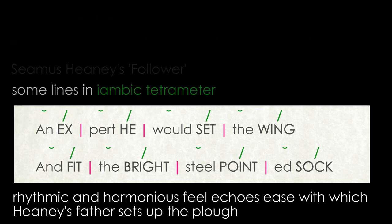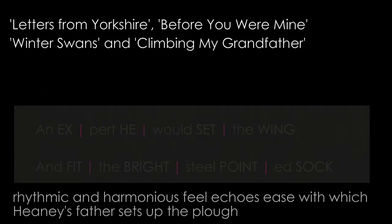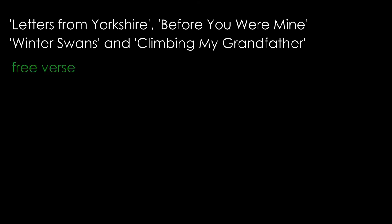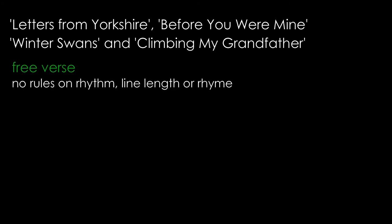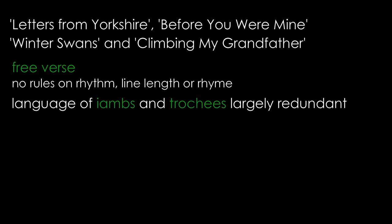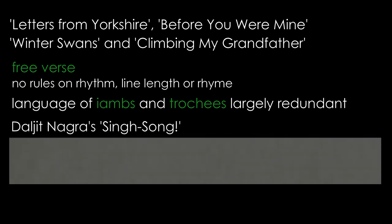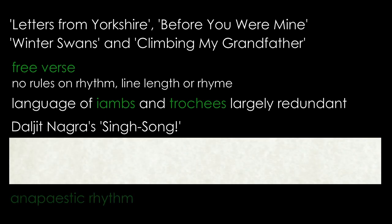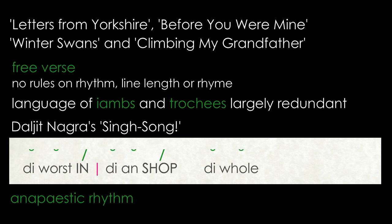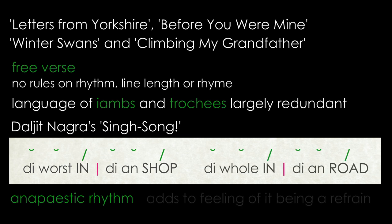Another group of poems — Letters from Yorkshire, Before You Were Mine, Winter Swans, and Climbing My Grandfather — are written in free verse, which is an even further move away from structural formality. They have no rules on rhythm, line length, or rhyme, and so the language of iambs and trochees is largely redundant. Although they have no rules, poets can still make use of metric feet here and there to enhance the meaning of the line. Take 'Sing Song' by Daljit Nagra — the ends of the lines in a couple of his stanzas have an anapestic rhythm: 'the worst Indian shop in the whole Indian road,' which adds to the feeling of it being a refrain.